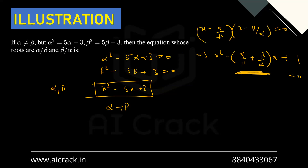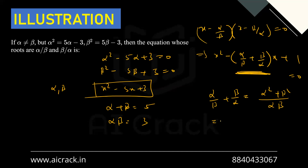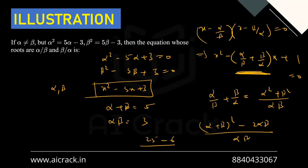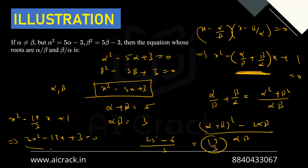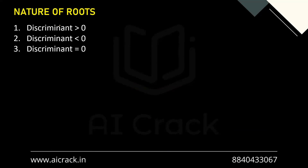From x² − 5x + 3 = 0, we have α + β = 5 and αβ = 3. Now α/β + β/α = (α² + β²) / αβ = [(α + β)² − 2αβ] / αβ = (25 − 6) / 3 = 19/3. So the equation is x² − (19/3)x + 1 = 0. Multiplying through by 3: 3x² − 19x + 3 = 0.